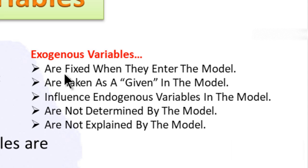To differentiate: exogenous variables are fixed when they enter a model. They are always taken as given in the model. They influence the endogenous variables but are not influenced by them. They are not determined in the model and cannot be explained by the model — the model is not made to explain these things. Variables that are not being explained or determined in the model are known as exogenous variables.